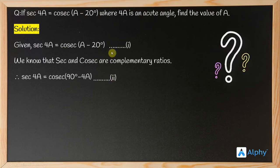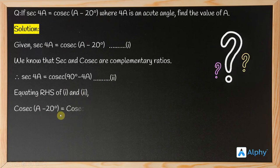From equations 1 and 2, both have the same LHS, which is sec 4A. This means we can equate the RHS of equations 1 and 2. We get cosec(A minus 20 degrees) equals cosec(90 degrees minus 4A).